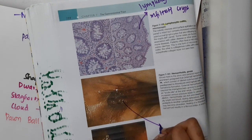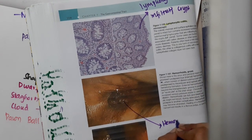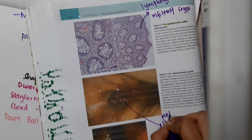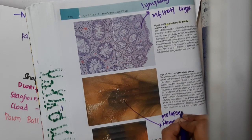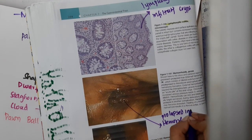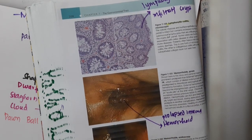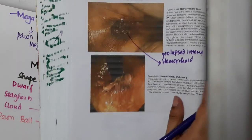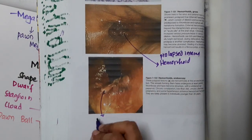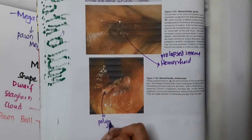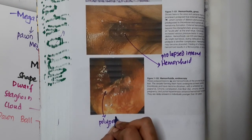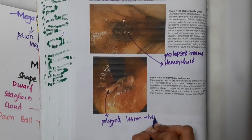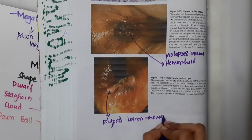This is the picture showing hemorrhoids — specifically prolapsed internal hemorrhoids, which are seen here. On endoscopy, these are polypoid lesions seen on proctoscopy, which are nothing but hemorrhoids in the anorectal region.